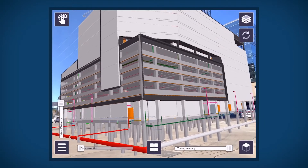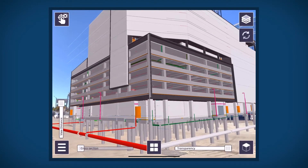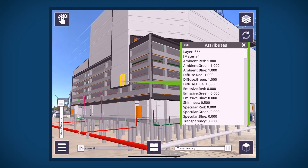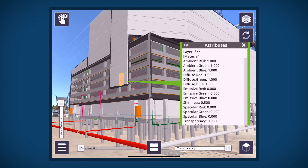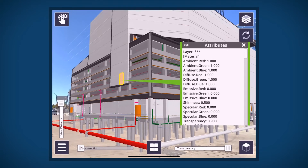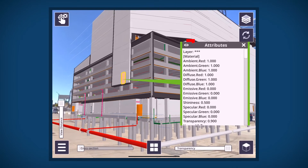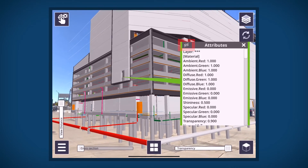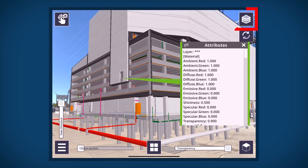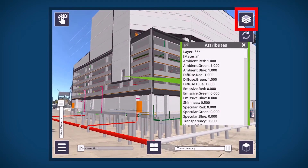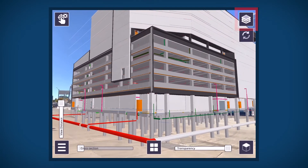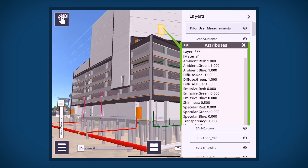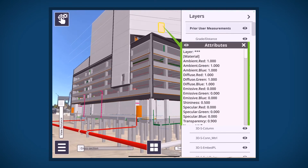Model attributes can be displayed by tapping anywhere on the model. Create customized views of the model by tapping the Hide/Unhide icon to control specific model objects. Tap the layer icon to display all of the model layers.